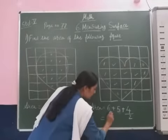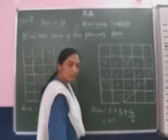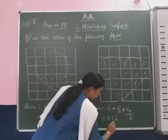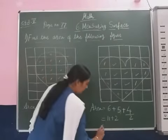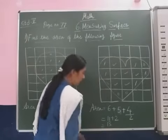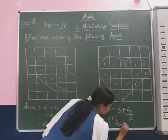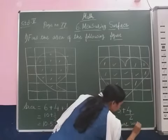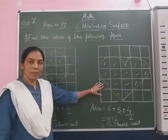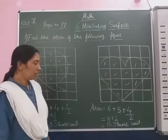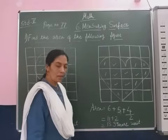6 plus 5 is 11, 11 plus 4 by 2, that is 13 square units. So this shape, this area of this shape we found here, that is 13 square units.